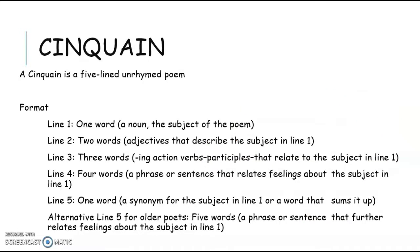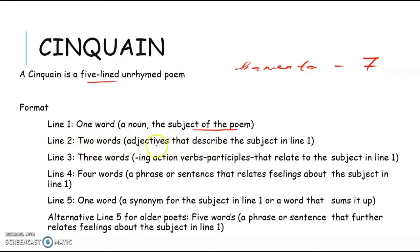Next, we have Cinquain. Cinquain is a five-line unrhymed poem. Different from Diamante, Cinquain consists of five lines only, while Diamante consists of seven lines. For the first line, we have one word — a noun. This word is going to be the subject of your poem. The second line has two words consisting of adjectives that describe the subject.